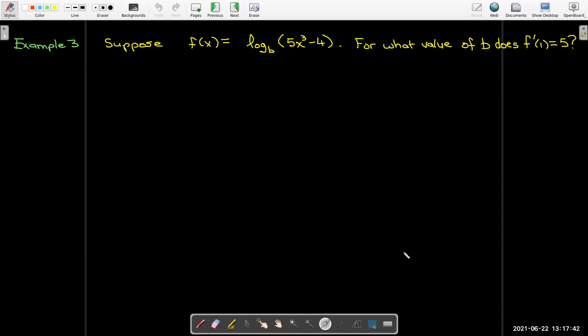In our last example, we have a different type of problem, but we can use the same techniques that we used to solve the other examples. We're given that f of x is a log function. It's log base b of 5x cubed minus 4. And what we're asked to find is the value of b, where f prime of 1 equals 5. So b is what we're solving for. What base will make f prime of 1 equal to 5?